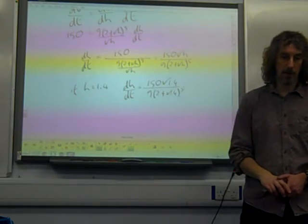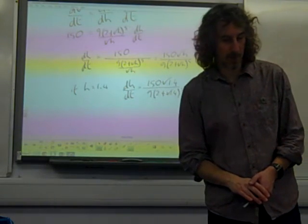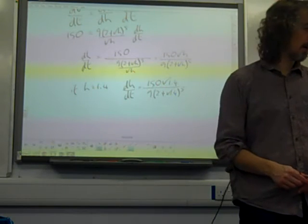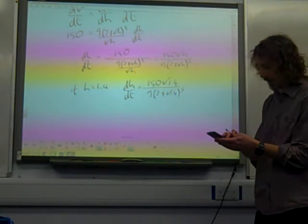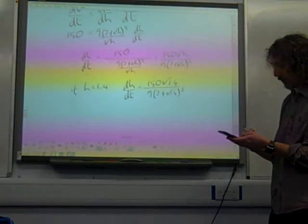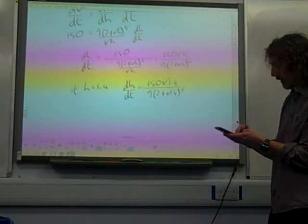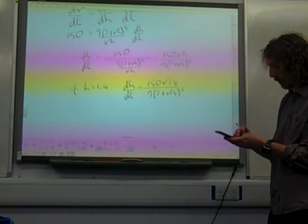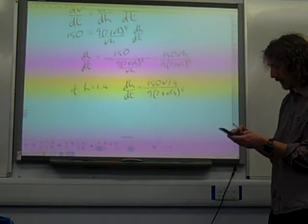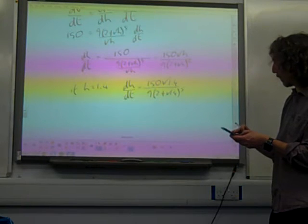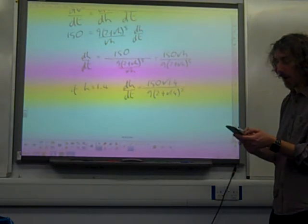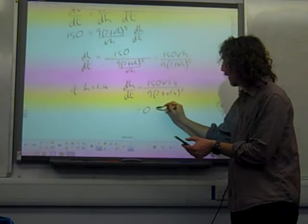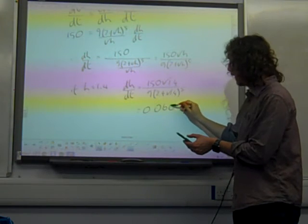And we put all of that lovely lot into our calculator. Nobody's got a calculator today. Oh, can I do it? That's fine. And we get our answer. Here we go. 150 times root 1.4 over 9 brackets 2 plus root 1.4. Close the bracket. And we put it to a power of 5 and... Oh, it's there! 0.0603.